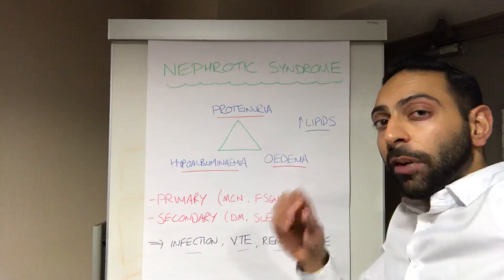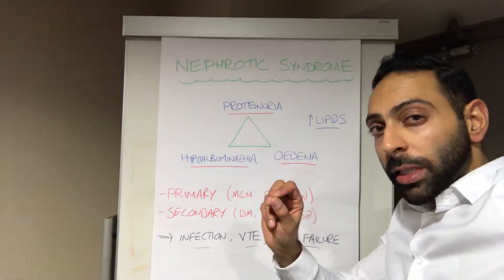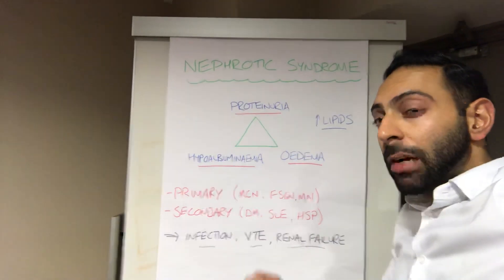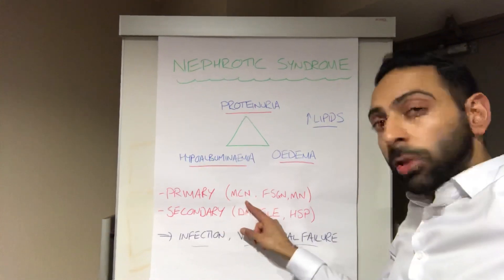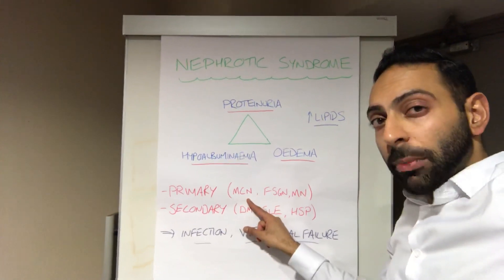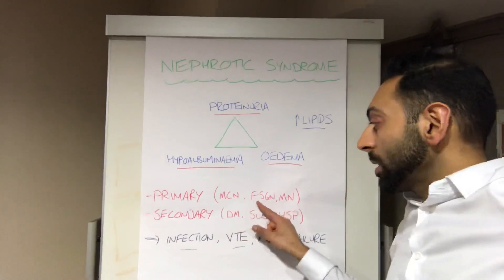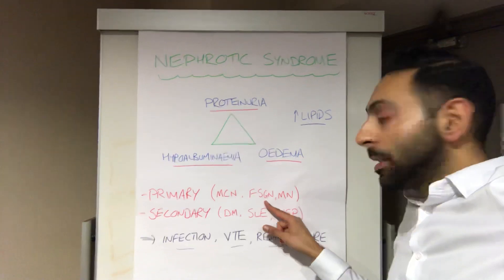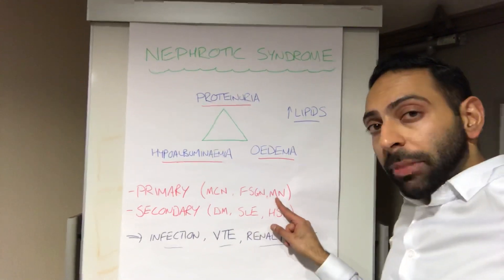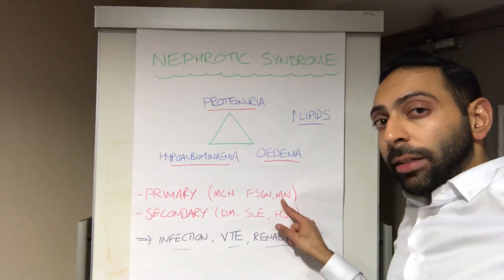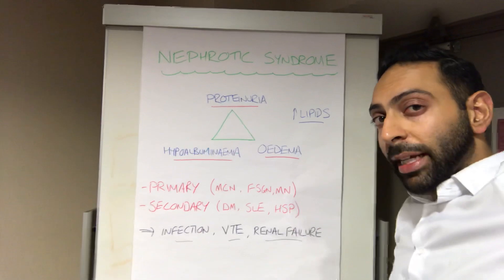Why does it happen? You have primary renal causes and secondary causes. Examples of primary renal causes include minimal change nephropathy, particularly in children, focal segmental glomerulosclerosis, and membranous nephropathy, particularly in adults. There are a couple of other causes within the kidneys as well.